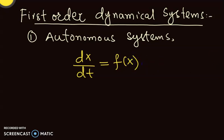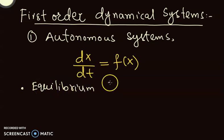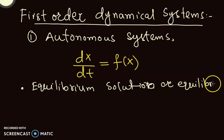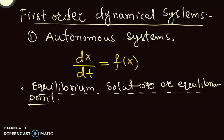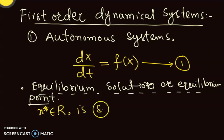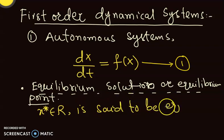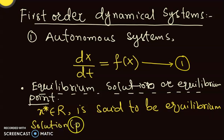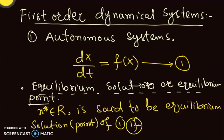For such types of functions we will define what we mean by equilibrium solution or equilibrium point. So let me label this as equation 1. x-star from the real numbers is said to be an equilibrium solution or point of equation 1 if f of x-star equals 0.